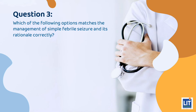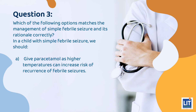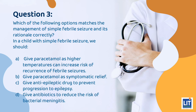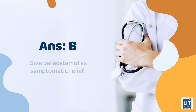Question 3: Which of the following options matches the management of simple febrile seizures and its rationale correctly? In a child with a simple febrile seizure, we should — A. Give paracetamol as high temperatures can increase risk of recurrence of febrile seizures. B. Give paracetamol as symptomatic relief. C. Give an anti-epileptic drug to prevent progression to epilepsy. Or D. Give antibiotics to reduce the risk of bacterial meningitis. The answer is B — give paracetamol as symptomatic relief.